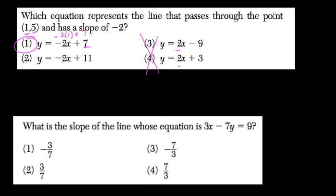If we try to plug it into the other one, we get negative 2 times 1, which is negative 2, plus 11, which is 9. And we want to get 5 when we plug in 1 because that point is on the line.